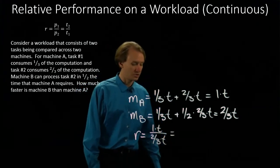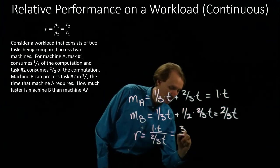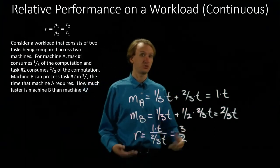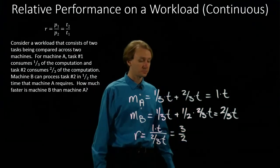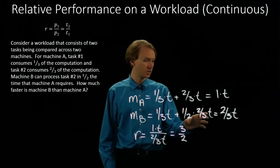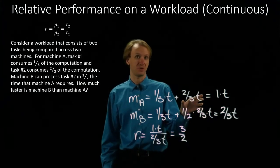Obviously, when I reduce this, we get 3/2. So machine B is 50% faster than machine A. Machine B can get twice as much work done on task two in the same amount of time that machine A spends on that task.